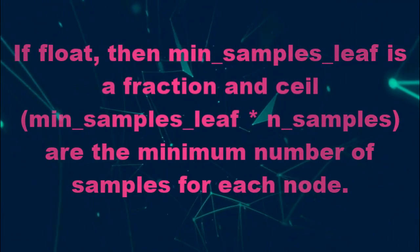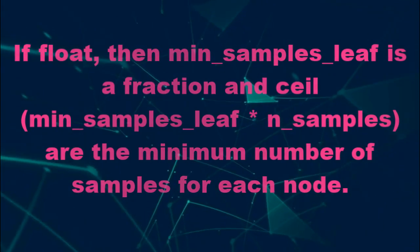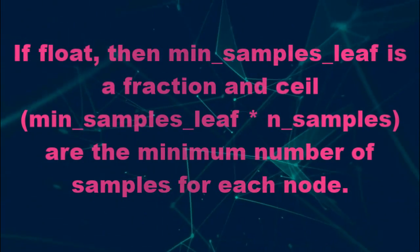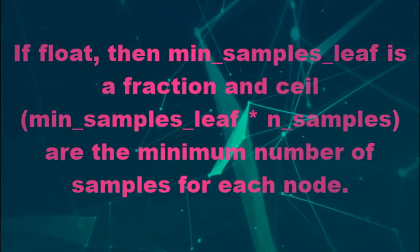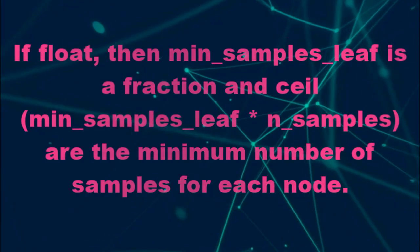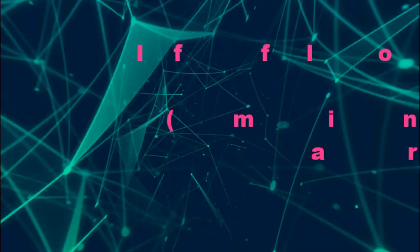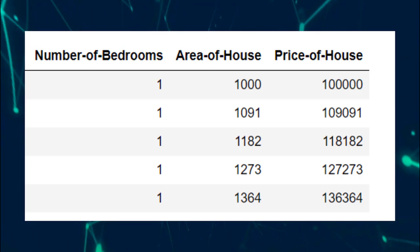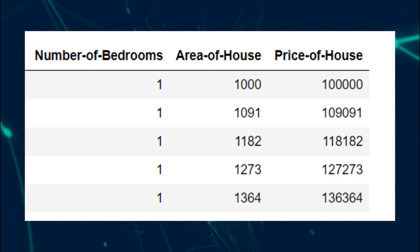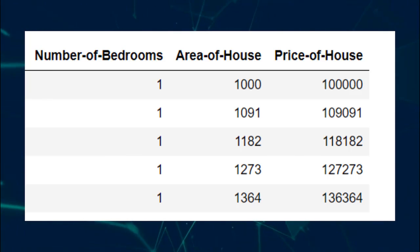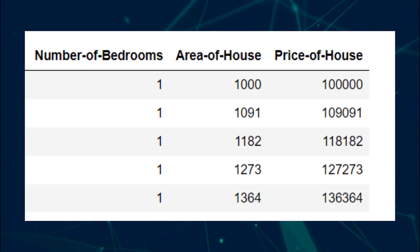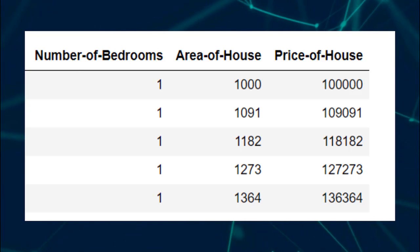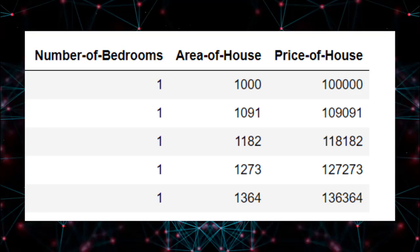If integer, then consider minimum sample leaf as the minimum number of samples at a leaf. However, if float, then minimum sample leaf is a fraction and we need to apply the ceiling method to the product of the float value and the number of samples. In this tutorial, we are going to predict the price of a house based on the number of rooms and the complete area of the house. Therefore, the independent variables or features are number of rooms and area of the house, and the dependent variable or label is the price of the house.